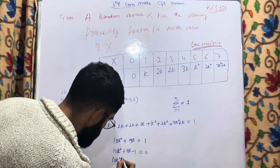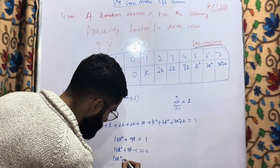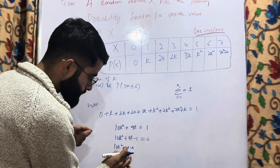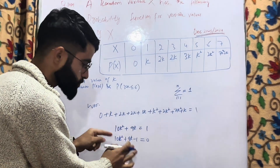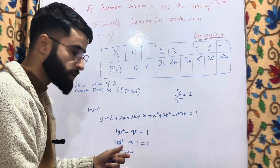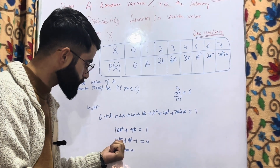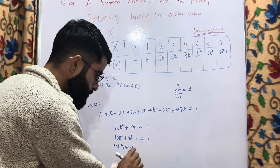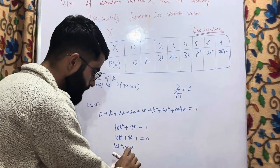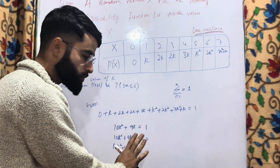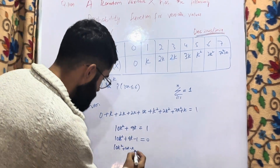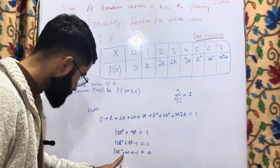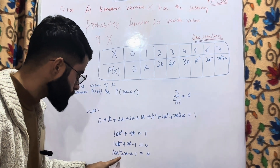I split 9k into 10k and −k. Check: 10k − k = 9k ✓ (sum is correct). And 10k × (−k) = −10k², which corresponds to 10k² × (−1) = −10k² ✓ (product condition met). So the equation becomes: 10k² + 10k − k − 1 = 0.